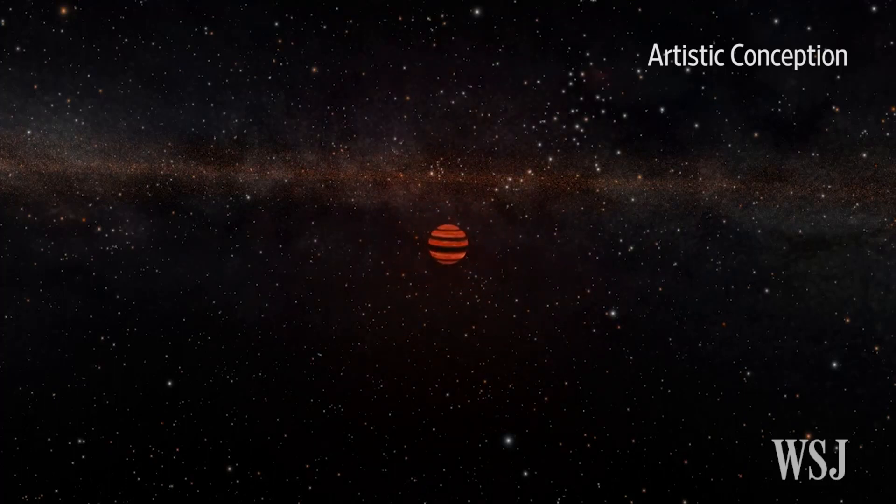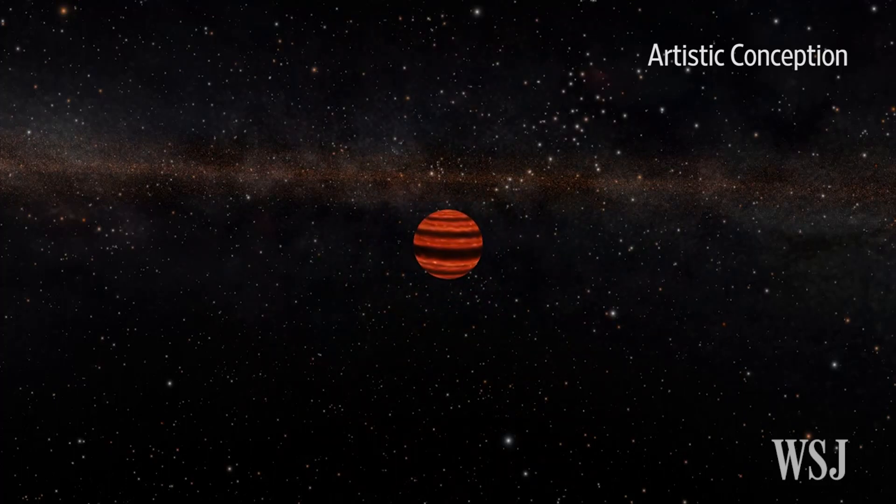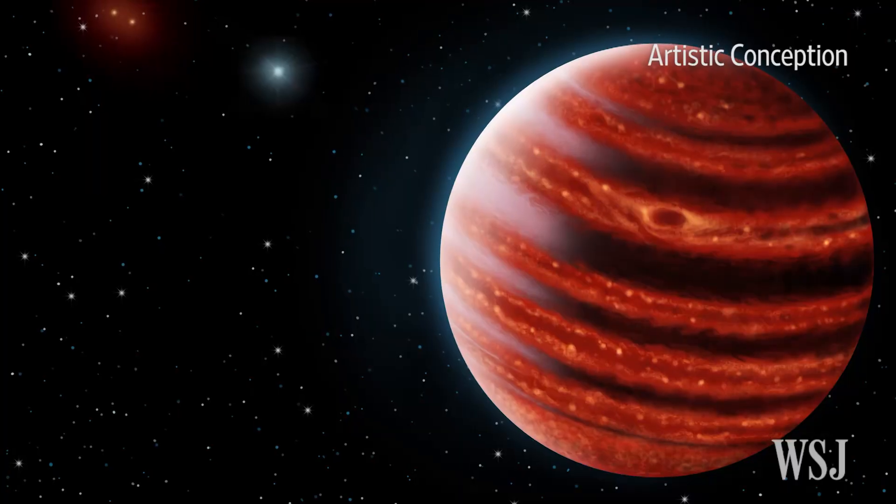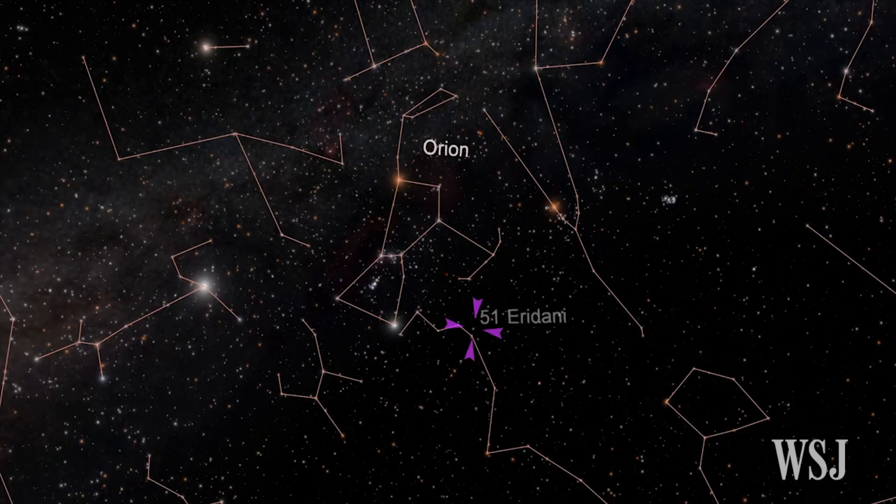Scientists have discovered a Jupiter-like planet in a solar system outside our own. It's called 51 Eridani b and is 100 light-years away.